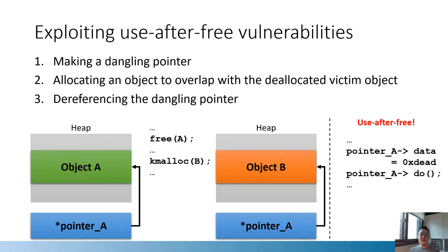If there is a use-after-free vulnerability, to exploit it we must take the following three steps. We first need to make a dangling pointer. Then we need to allocate an object to overlap with the deallocated victim object. And lastly, we should dereference the dangling pointer. Therefore, to defend against use-after-free exploits, we need to prevent any of these three steps.